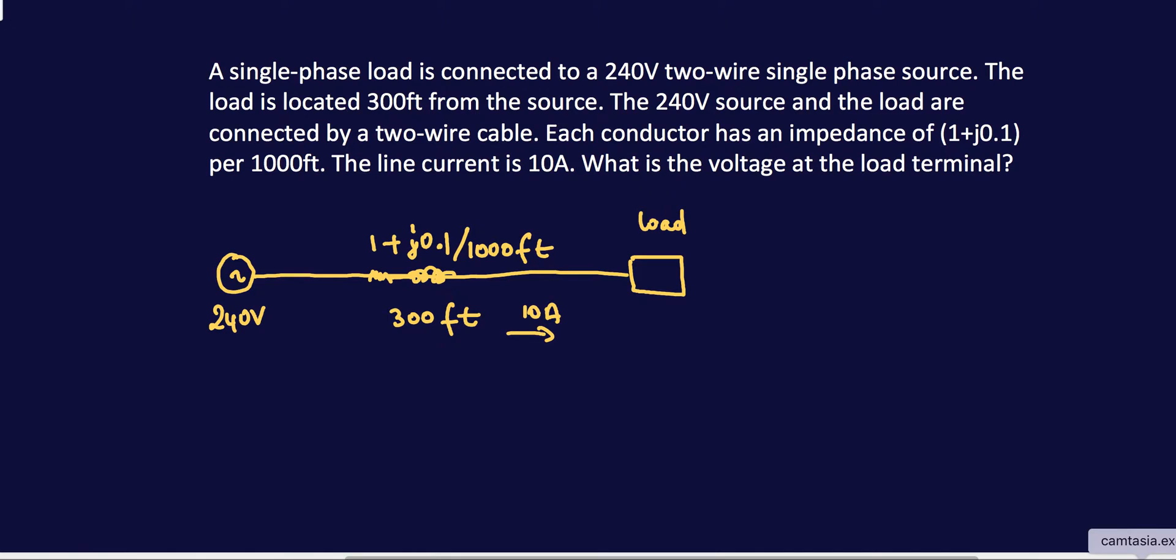Hello and welcome back to another video. We have an example here of a single-phase voltage drop problem. We are given a load, a single-phase load, connected to a source of 240V at a distance of 300 feet from the source. Each conductor has an impedance of 1+j0.1Ω per thousand feet. Given a line current of 10A, we are asked to find the voltage at the load terminal.